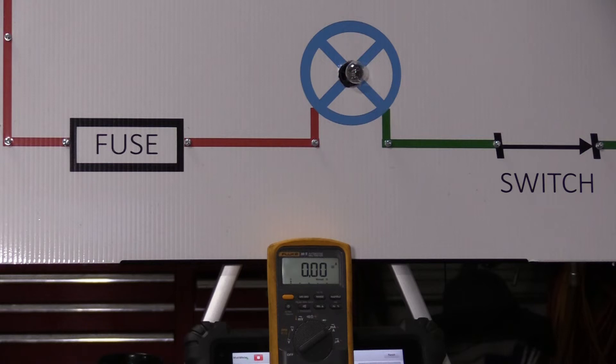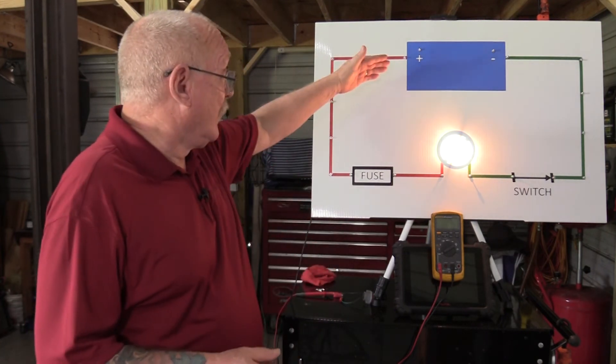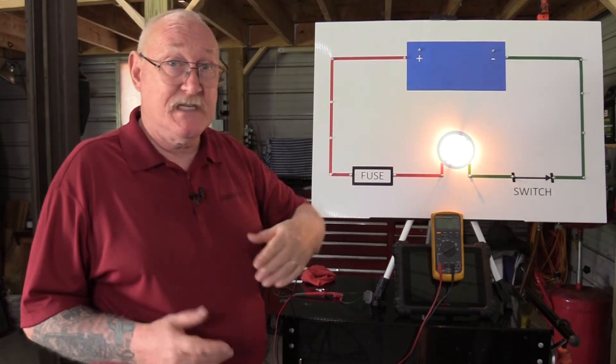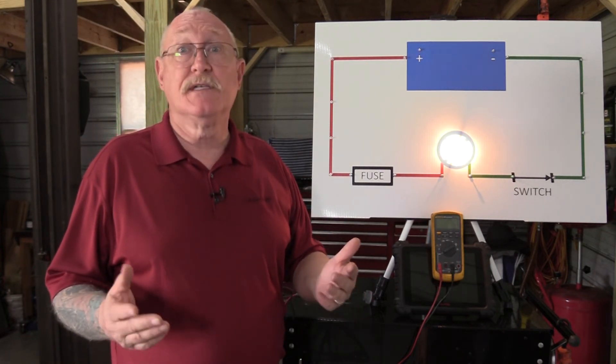For example, if there's an open circuit, resistance becomes infinite, and current flow becomes zero. We all know that, right? And if the circuit shorts to ground anywhere on the positive side of the circuit before the load, then resistance is going to drop to next to nothing, and current flow is going to skyrocket.